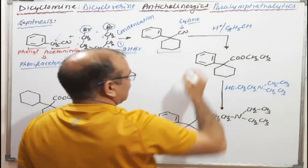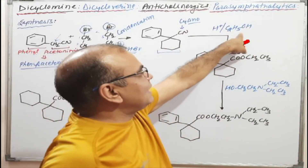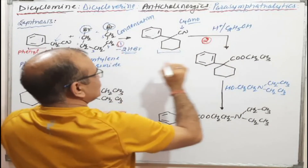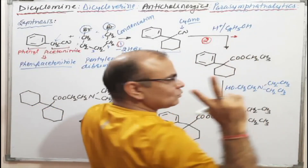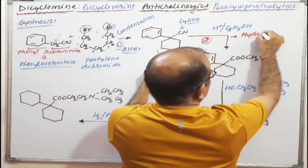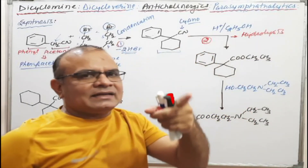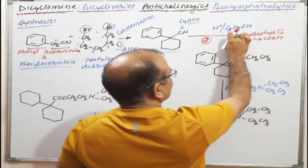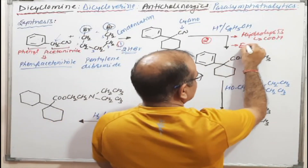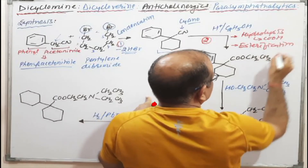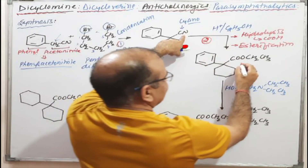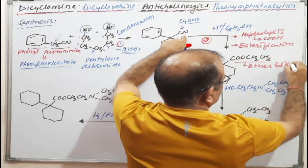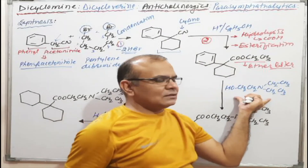In step two, the cyano group undergoes acidic hydrolysis converting it to a carboxylic group, followed by esterification with ethanol, giving an ethyl ester. So the two reactions in this step are: first, hydrolysis of the cyano group to carboxylic acid; second, esterification to form the ethyl ester.